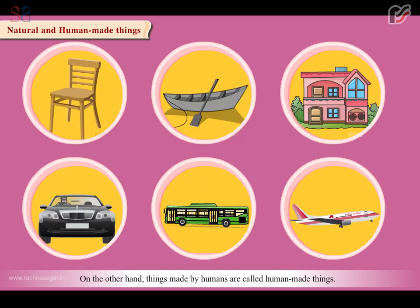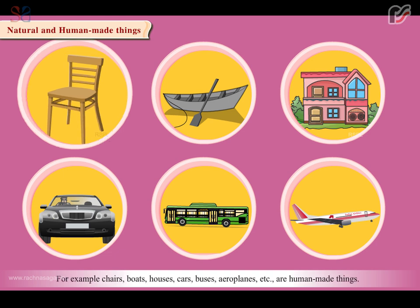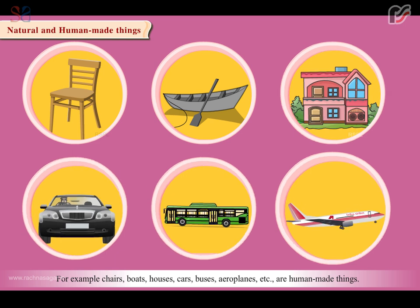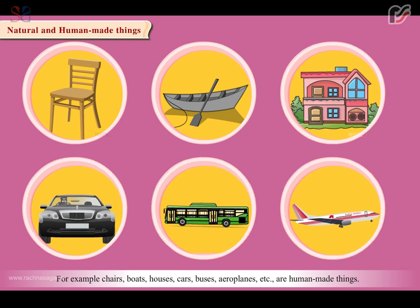On the other hand, things made by humans are called human-made things. For example, chairs, boats, houses, cars, buses, aeroplanes etc. are human-made things.